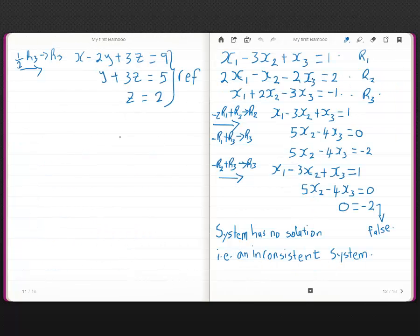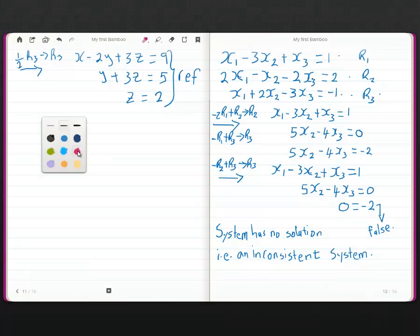That gives us row 1, row 2, row 3 and that is our row echelon form. Now that I've mentioned the word reduced, let me just go ahead and say something about it. Our ultimate target would be to reduce the system to what is known as reduced row echelon form. For now, let's just relax and stay with the row echelon form.